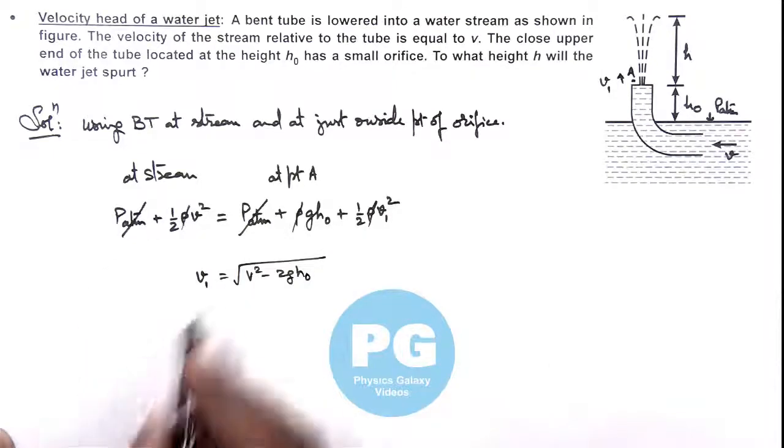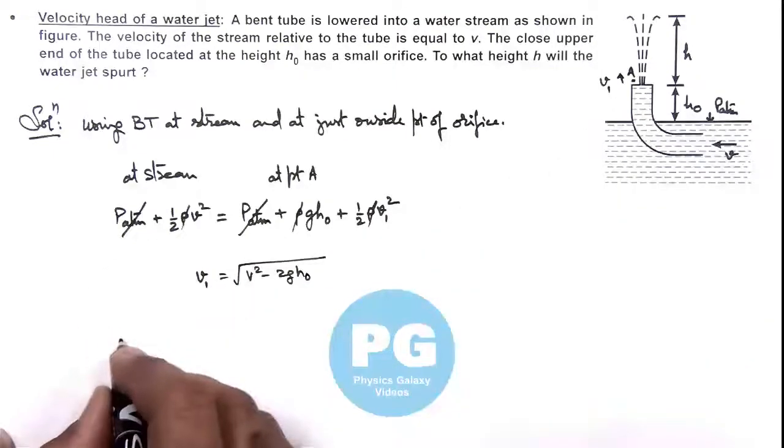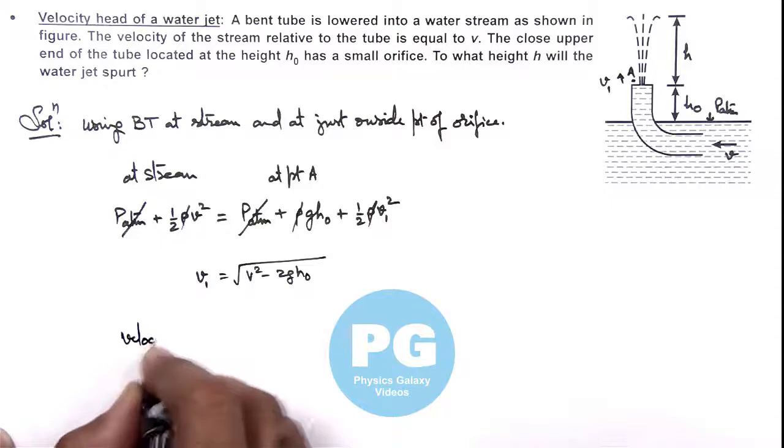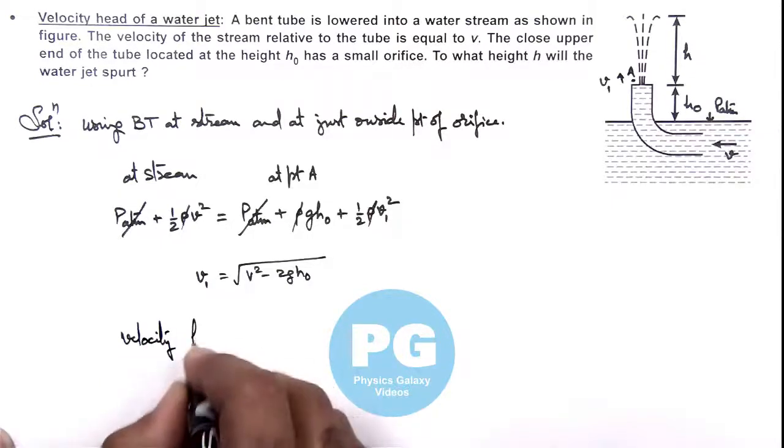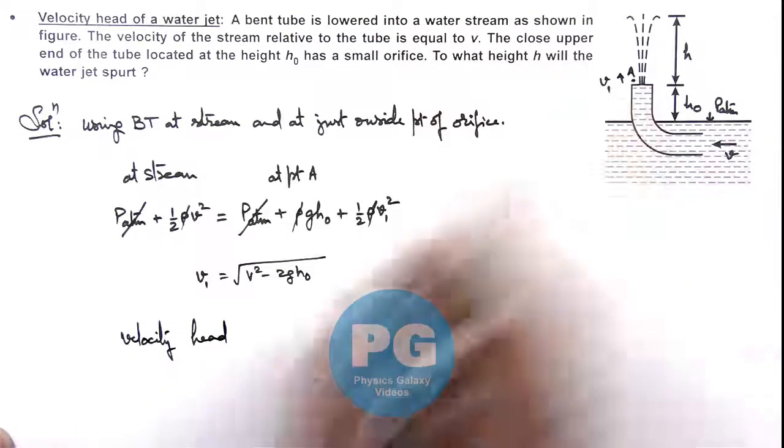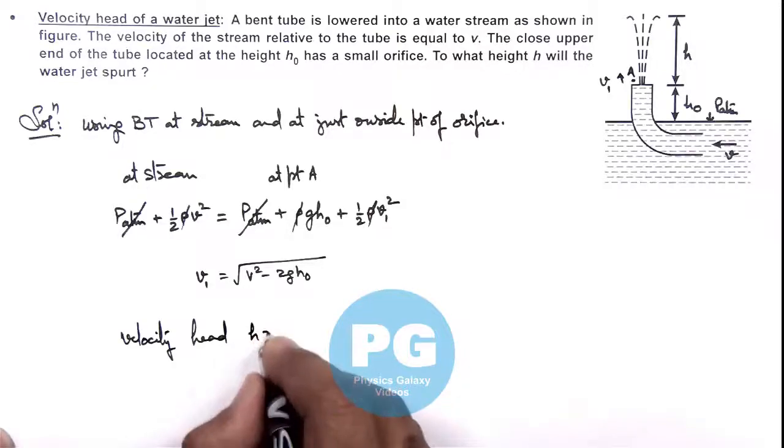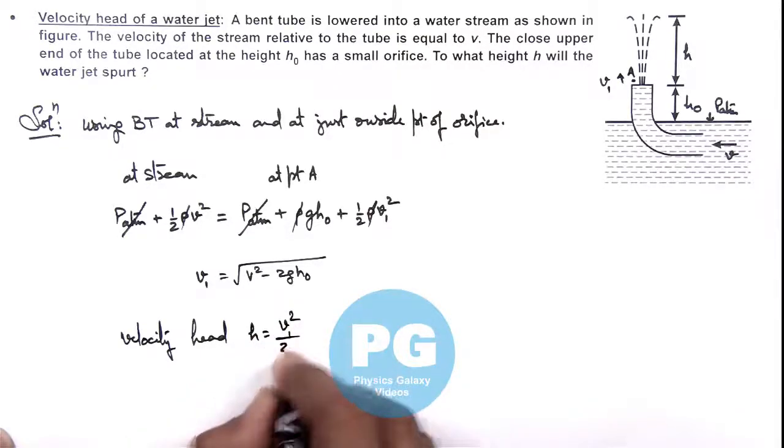Velocity head, we know under gravity it can be given as v_1 square by 2g.